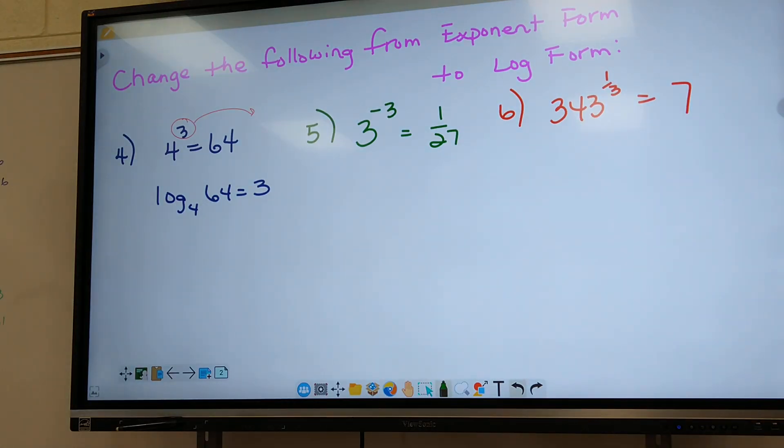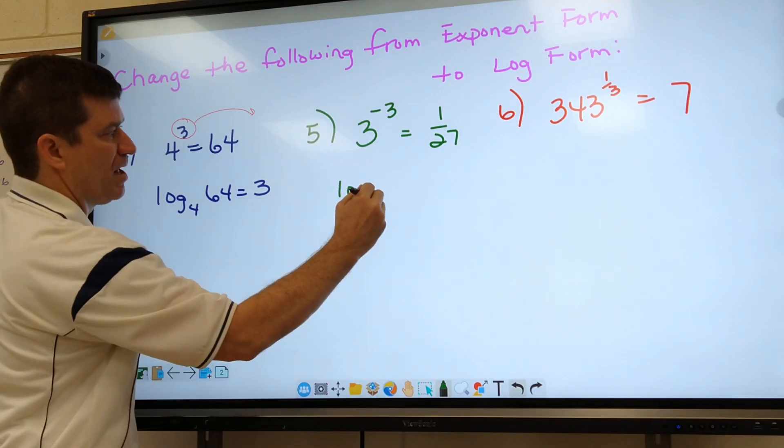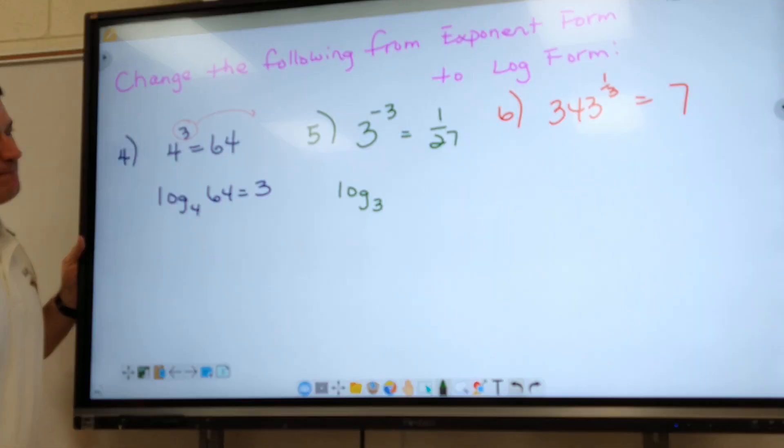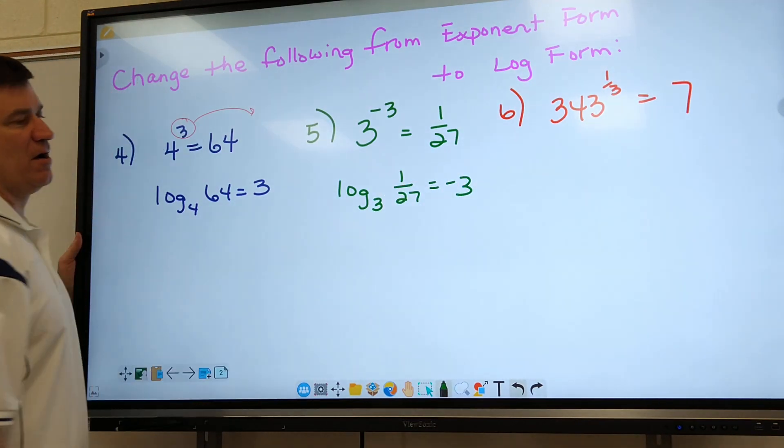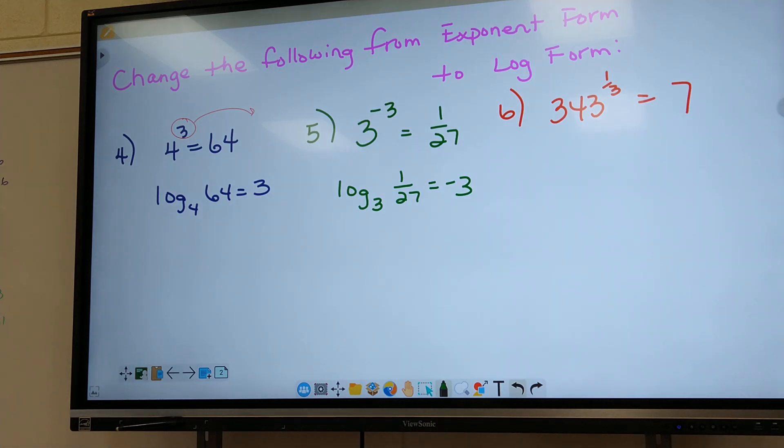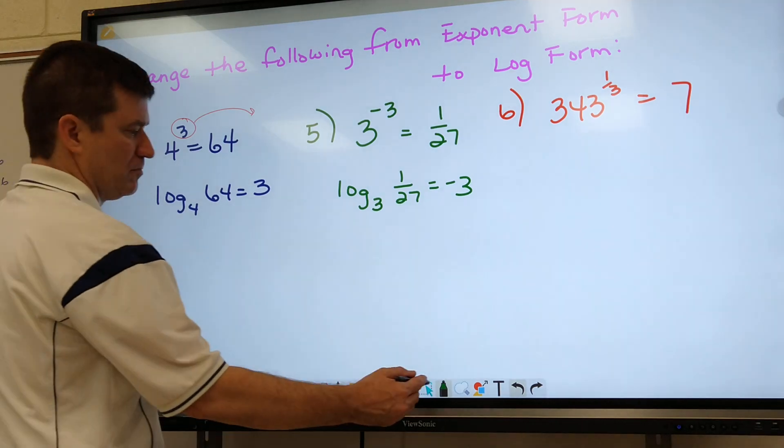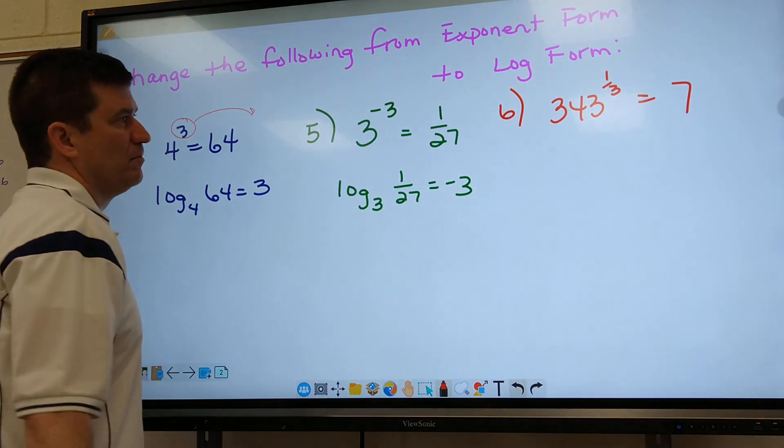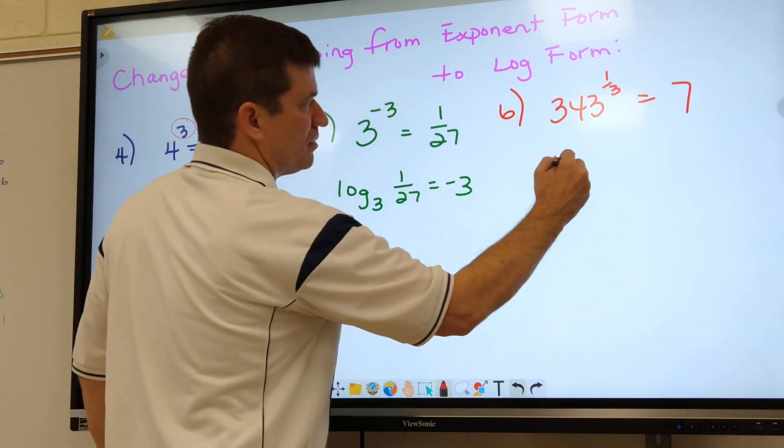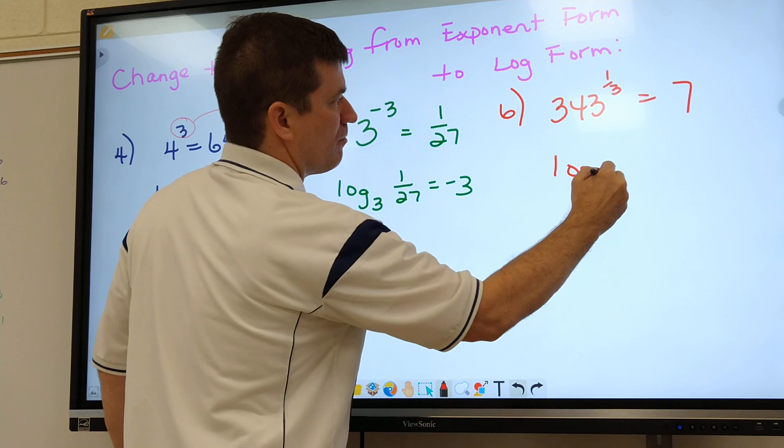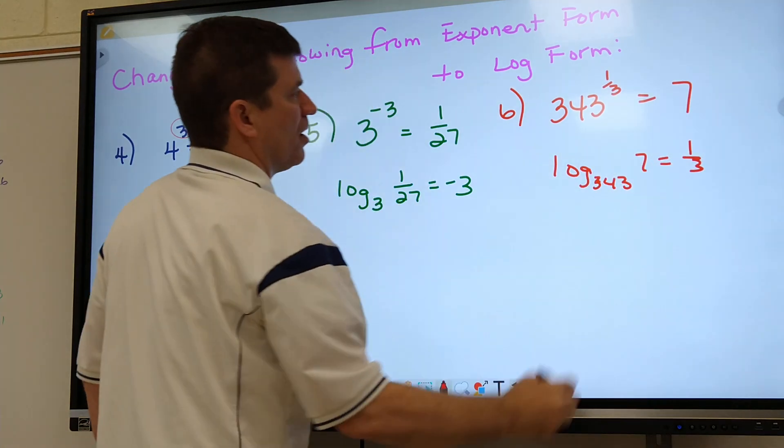All right, Harlan, number five, how do I write it in log form? Log base three. Good job. All right, check number six. Log base three of seven equals one over six. Okay.